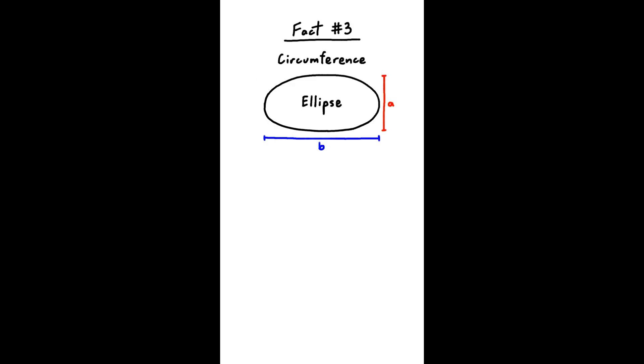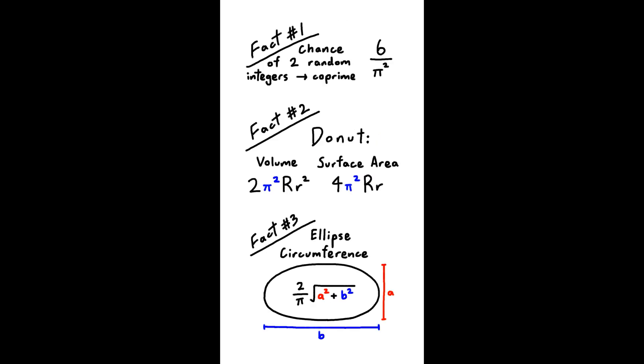Third, the formula for the circumference of an ellipse has pi in the denominator. That was all three facts. Pause here to lock in your guess.